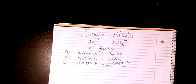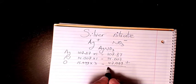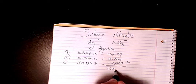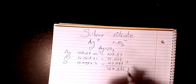Then you need to add them: 107.87 plus 14.007 plus 47.997, which is going to be 169.876 grams per mole.